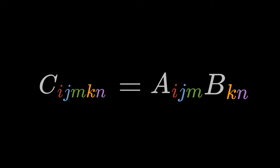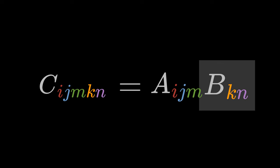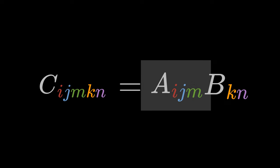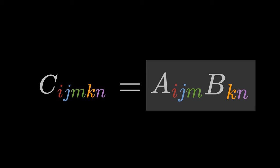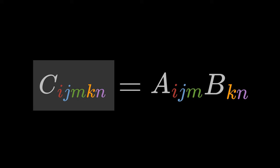As you have probably already noticed, Bkn represents the K, N component of tensor B, and Aijm is the Ijm component of tensor A. If we form the tensor product, then this is the tensor product of the components. The result is the Ijmkn component of tensor C.